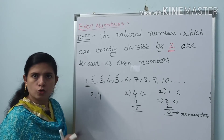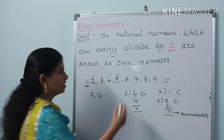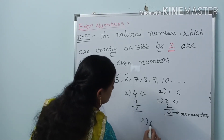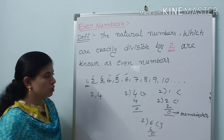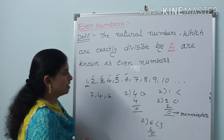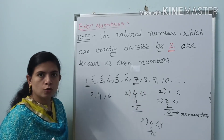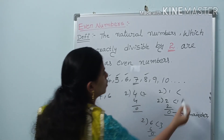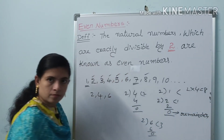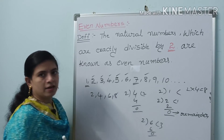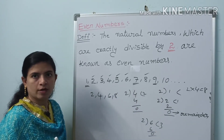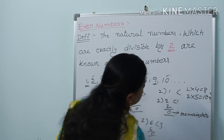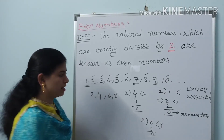Let us take 5. Is 5 exactly divisible by two? No, so 5 is not an even number. Let us take 6. Is 6 exactly divisible by two? Yes. 2 threes are 6, so 6 minus 6 equals 0. So 6 is an even number. Let us take 7 — not exactly divisible by two, so 7 is not an even number. 8 is exactly divisible by two: 2 fours are 8, remainder 0, so 8 is an even number. 9 is not exactly divisible by two. 10 is exactly divisible by two: 2 fives are 10, 10 minus 10 equals 0, remainder is 0, so 10 is an even number.